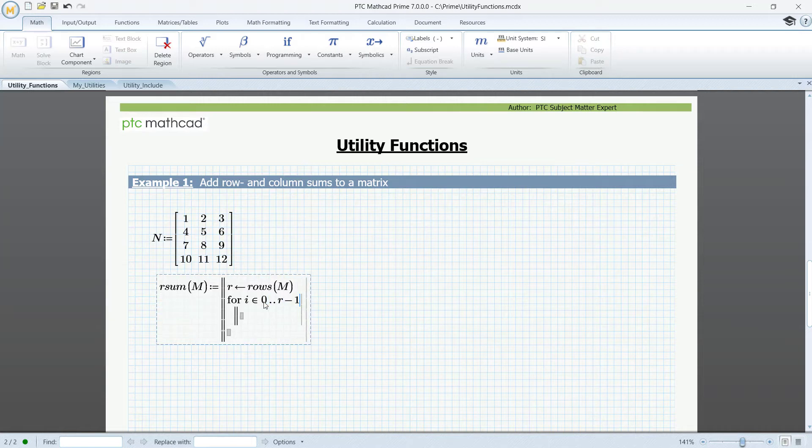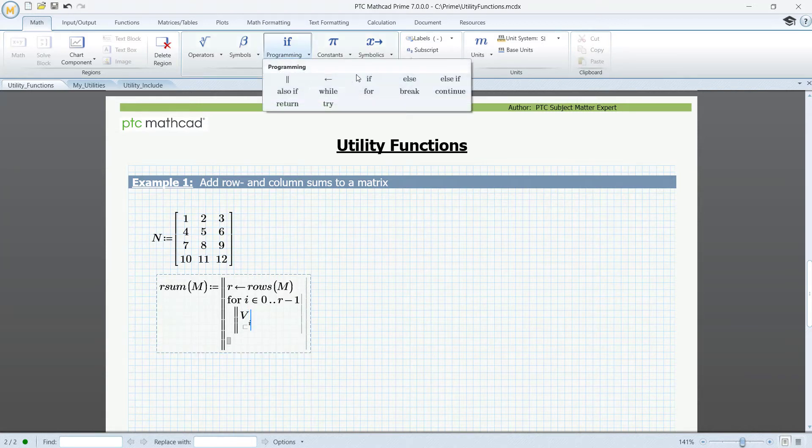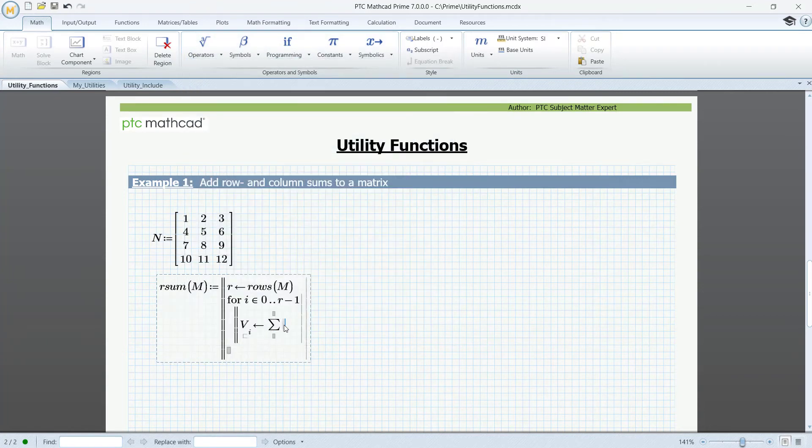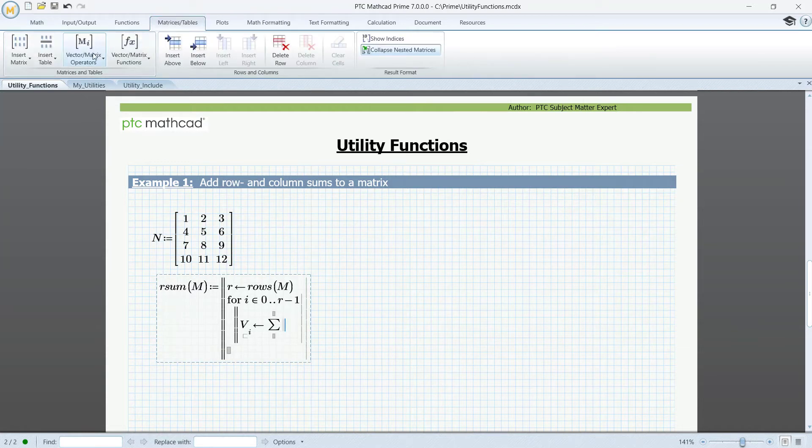Define the i-th component of a vector b to be the sum of the row vectors in M. So go to the matrix toolbar, select vector matrix operations, and matrix row, and enter i. So this will give you the sum of the elements in the i-th row of M.